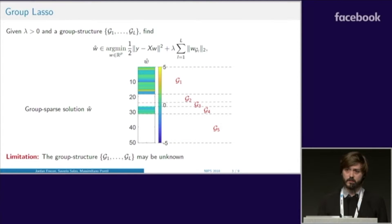Given some parameter lambda and prior knowledge of the group structure, the group lasso solution minimizes the sum of two terms. The first one measures the discrepancy between Y and X times W, and the second one enforces group sparsity. Here you see an example where W hat is made of five groups, and only the first and fourth groups are relevant.